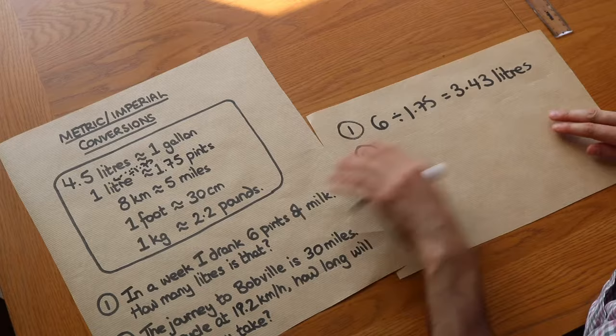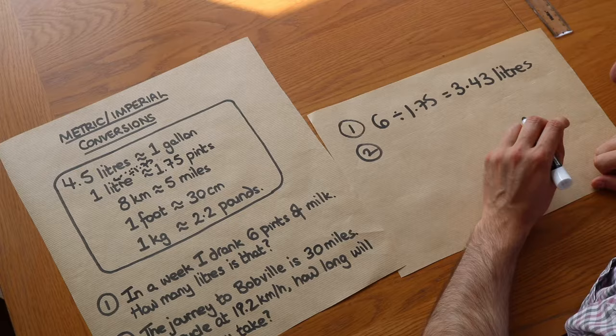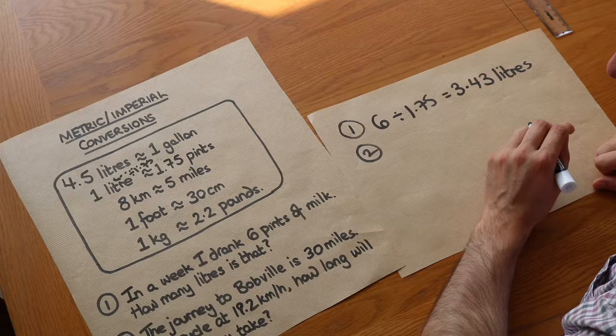And then the second one, we've got a bit of speed distance time here. The journey to Bobville is 30 miles. If I cycle at 19.2 kilometres per hour, how long will the journey take?